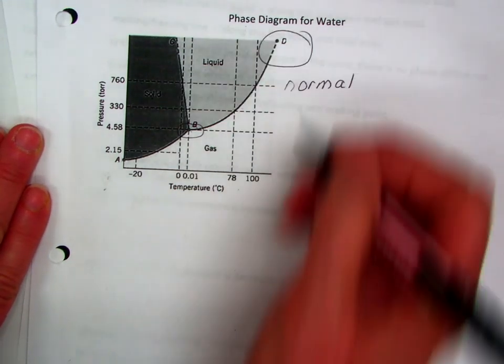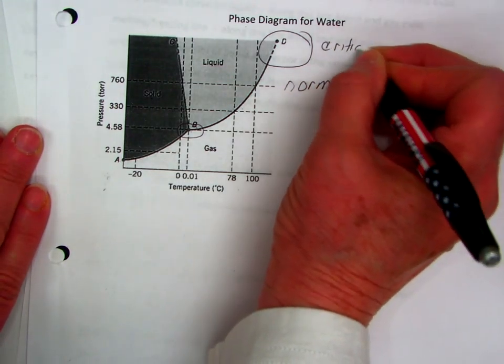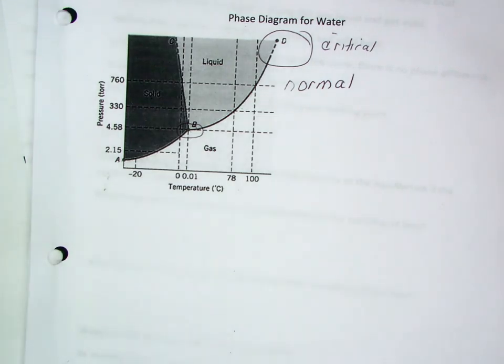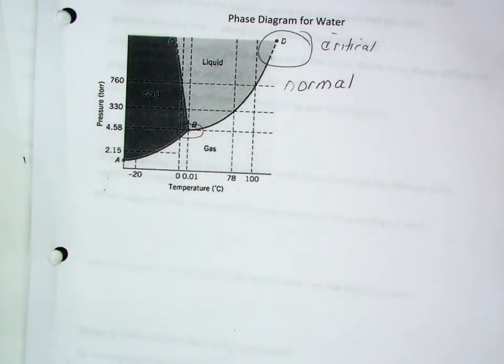So, this is the triple point. And another interesting point up here is D. This is called the critical point. And the critical point is interesting because once you get up here, you see how this line starts to get dotted? There is no longer a distinction between the liquid and the gas. You cannot tell this is properties of a liquid, this is properties of a gas because it is indistinct and it's called a supercritical fluid. And the properties of that material are somewhere in between.